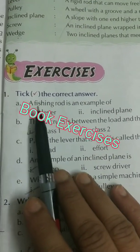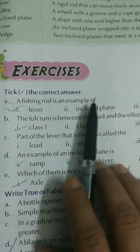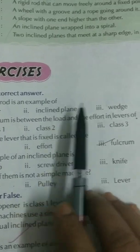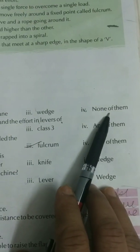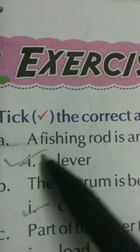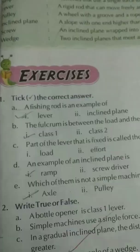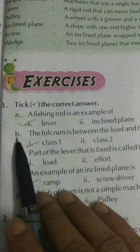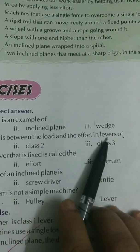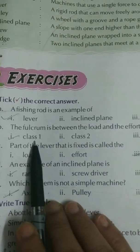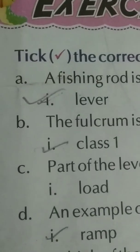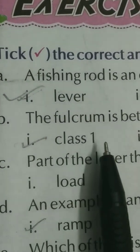Book exercises — choose the correct answer. First: a fishing rod is an example of — lever, inclined plane, wedge, or none of them? Correct answer: lever. Second: the fulcrum is between the load and the effort in a lever of — class one, class two, class three, or any of them? Correct answer: class one.